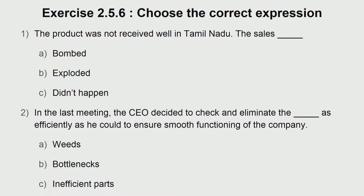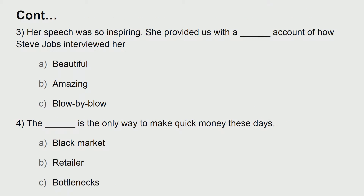Next exercise — choose the correct expression. Number 1: the product was not received well in Tamil Nadu; the sales dash — bombed, exploded, or did not happen. Number 2: in the last meeting, the CEO decided to check and eliminate the dash as efficiently as he could to ensure smooth functioning of the company — weeds, bottlenecks, or inefficient parts. Number 3: her speech was so inspiring; she provided us a dash account of how Steve Jobs interviewed her — beautiful, amazing, or blow by blow. Number 4: the dash is the only way to make quick money these days — black market, retailer, or bottlenecks.